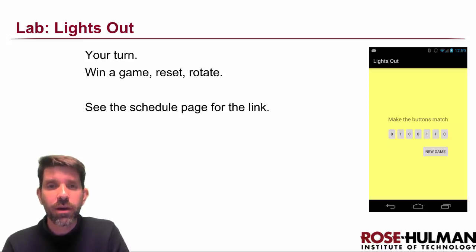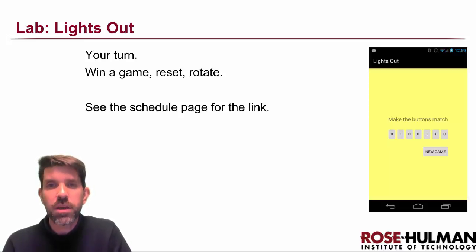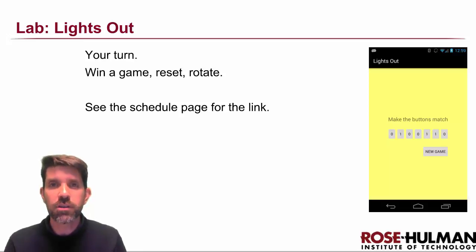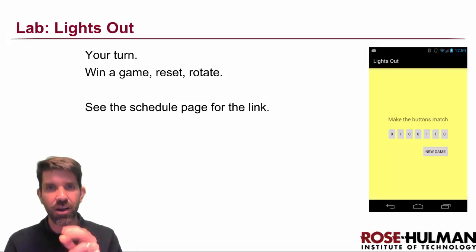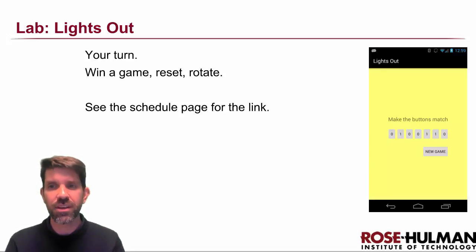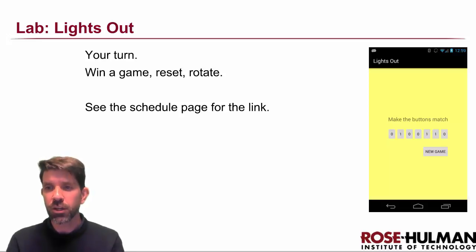It's time for a lab. We're going to be making the Lights Out game. The original game of Lights Out was a 2D grid of buttons that could be either light or dark. Whenever you pressed one, it would toggle the light on or off, but it would also change all of its neighbors. It was pretty tricky to play. This is a simpler version — we could call it Linear Lights Out.